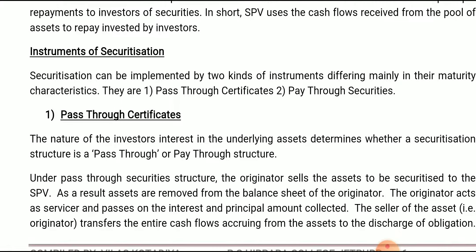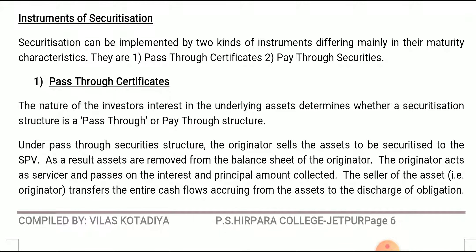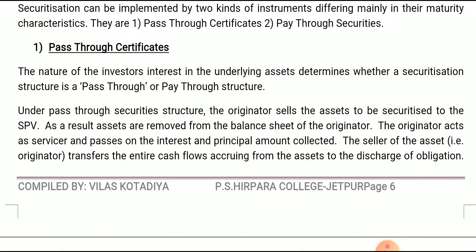Now let's discuss the instruments of securitization: pass-through certificates and pay-through certificates. Regarding pass-through certificates: the nature of investor interest in the underlying asset determines whether the securitization structure is pass-through or pay-through. In a pass-through security structure, the originator — that is, the bank — sells the asset to be securitized to the SPV. When the bank cannot provide loans to thousands of borrowers, the bank sells the mortgage pool — documents, house documents, property documents submitted by borrowers — to the SPV.